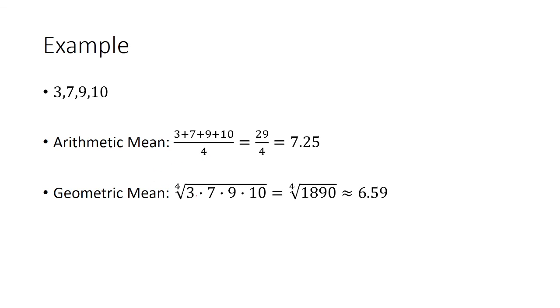The geometric mean is finding the product and taking the fourth root, which is about 6.59. The harmonic mean is 4 divided by the sum of the reciprocals, which is about 5.82.